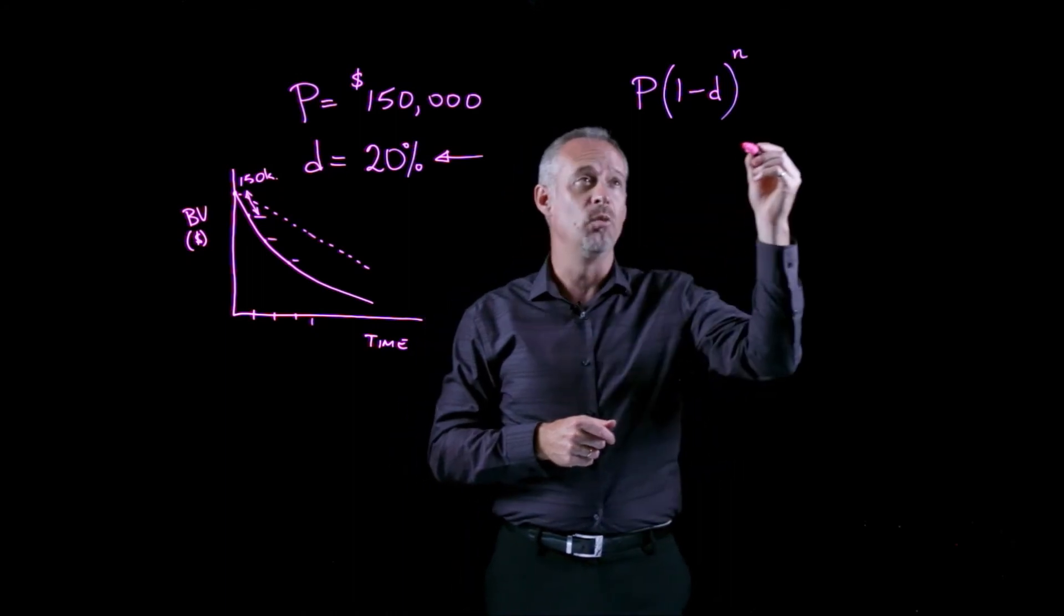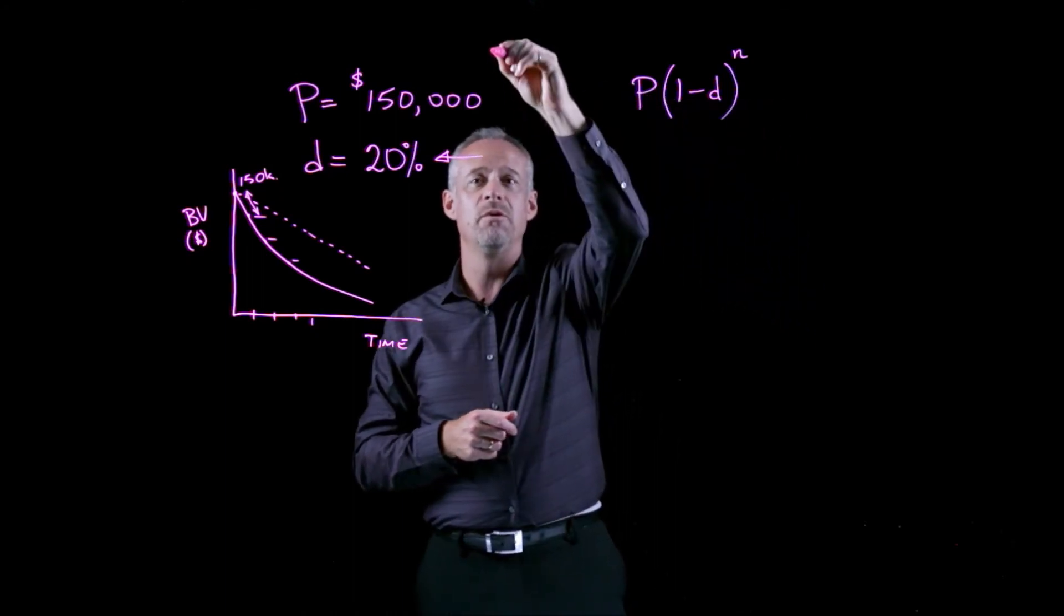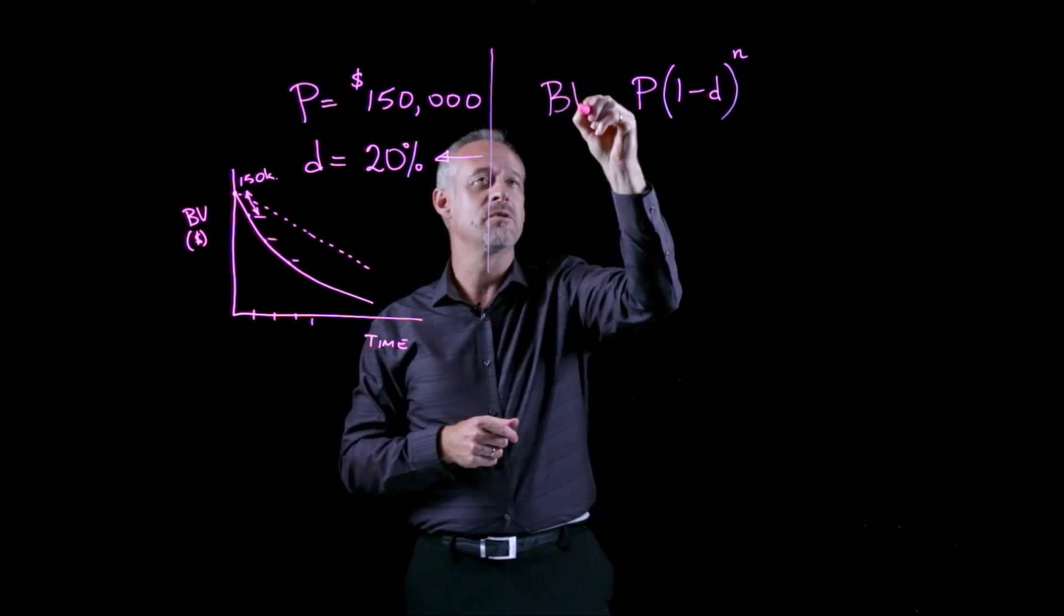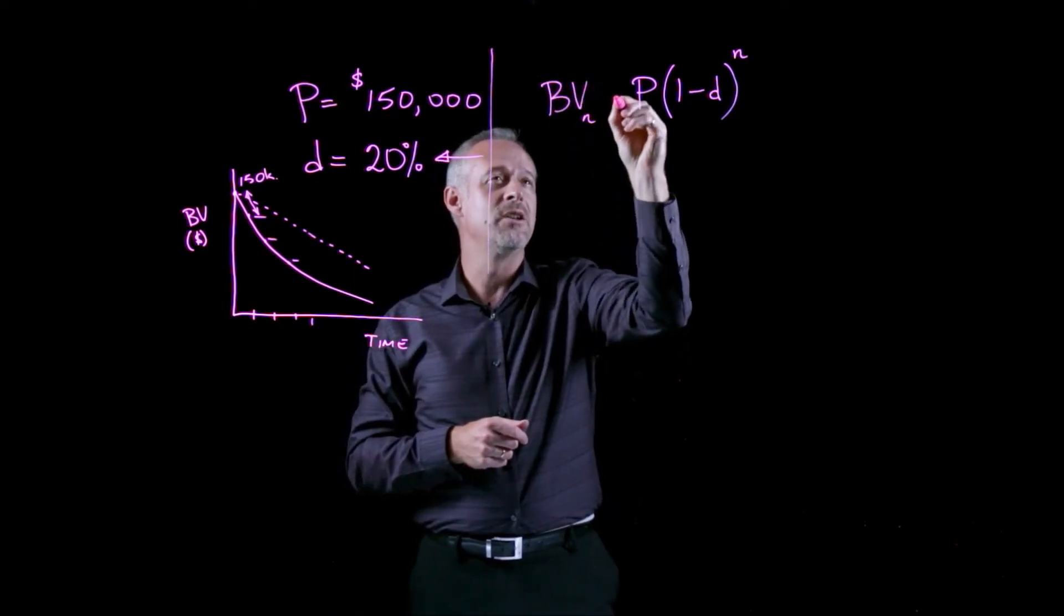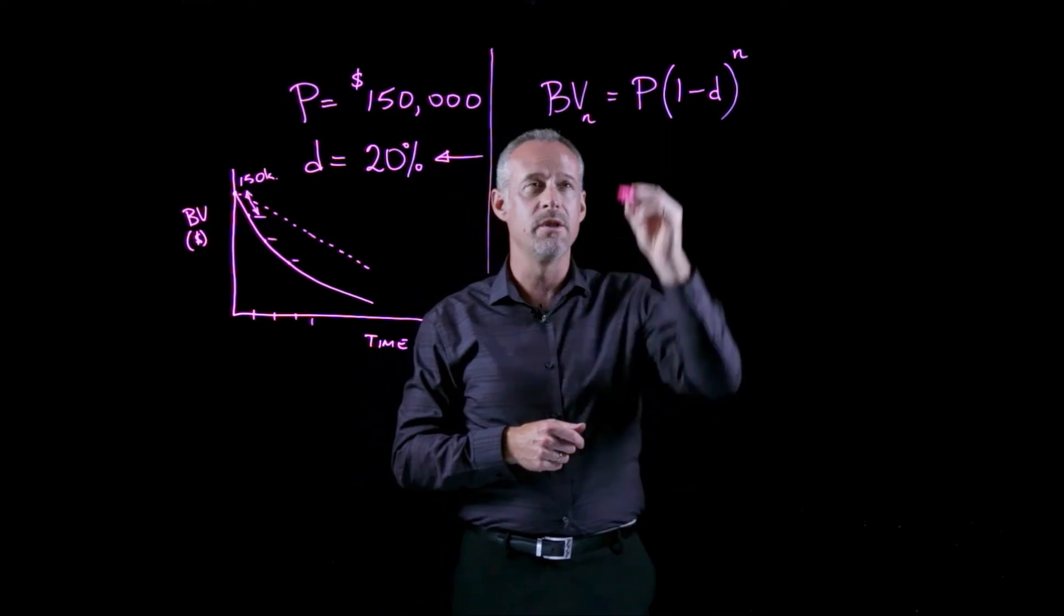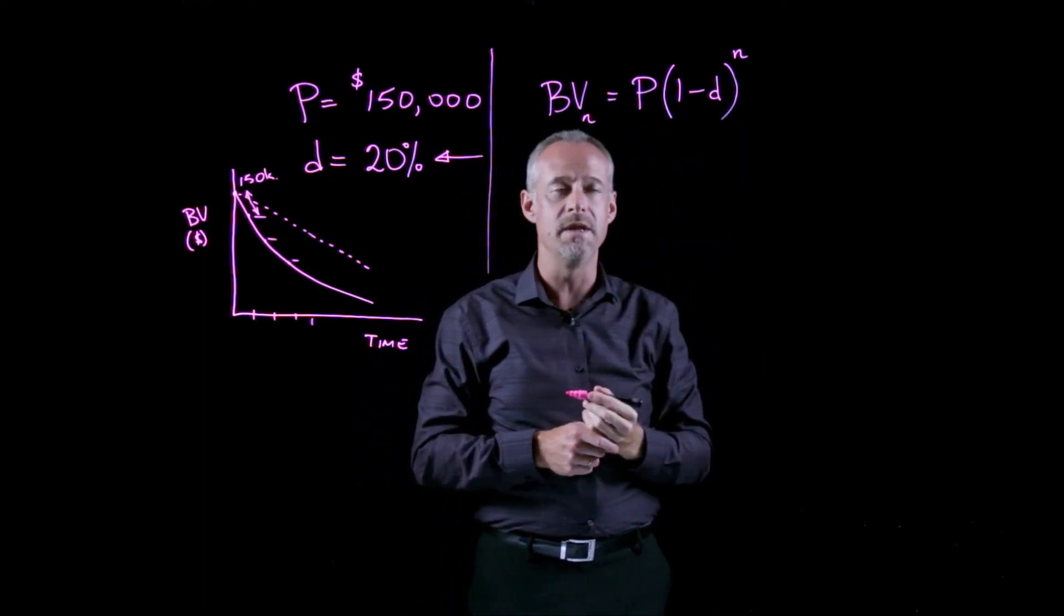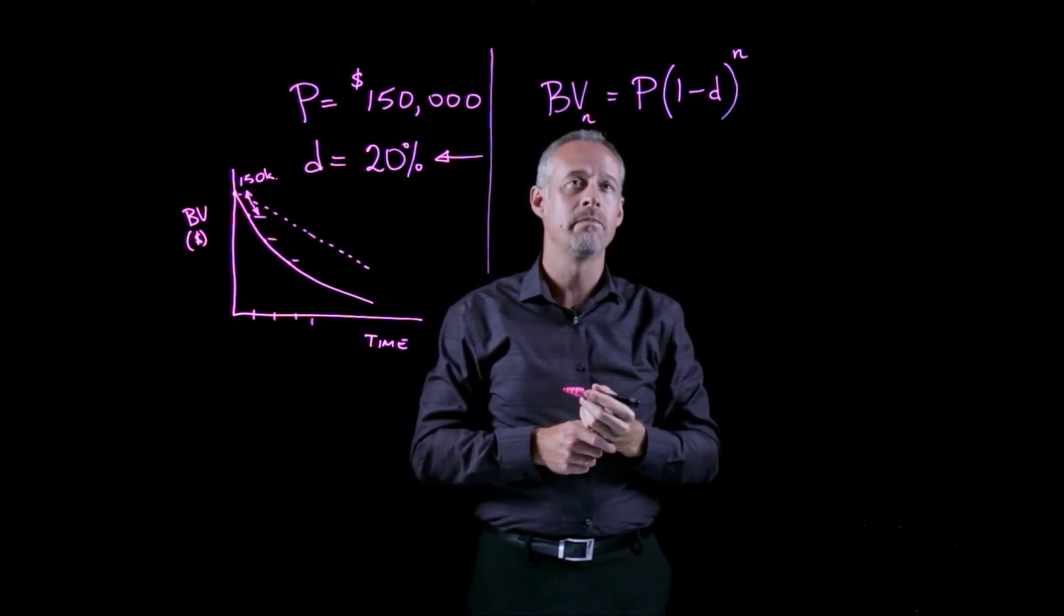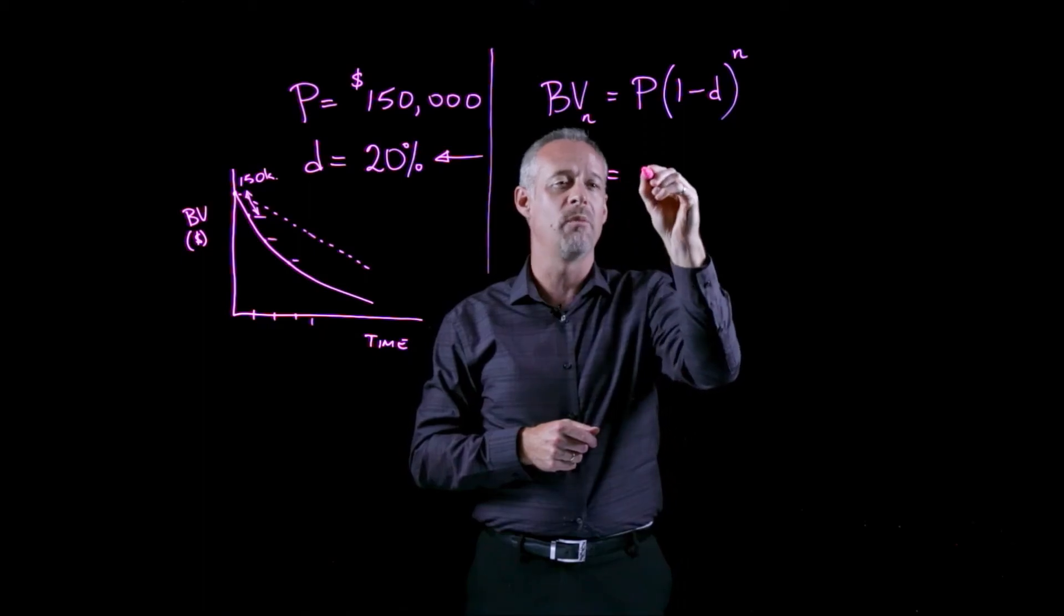In fact, we can use this to develop the equation. So the book value at the end of year n is really the purchase price times 1 minus d to the power of n. And if we work out what that is for this problem,